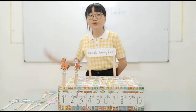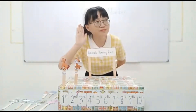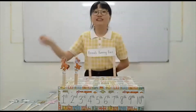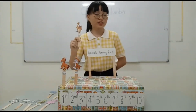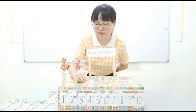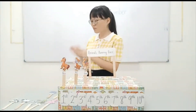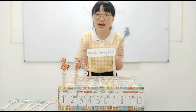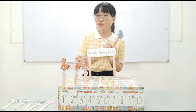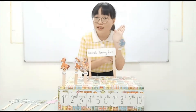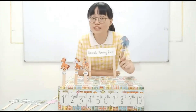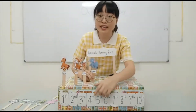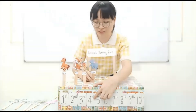And who is at the third position? Yeah, I heard the answer — the camel is at the third position. How about the elephant? Is the elephant running fast or slow? Yeah! The elephant is also running quite fast, so the elephant is at the fourth position.